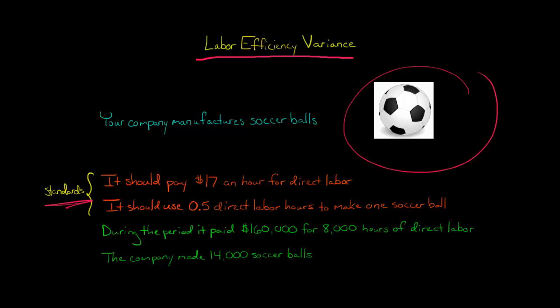So to make one soccer ball, it should take half an hour. And during the period, the company paid $160,000 for 8,000 hours of direct labor. And you, in fact, made 14,000 soccer balls from all that direct labor.